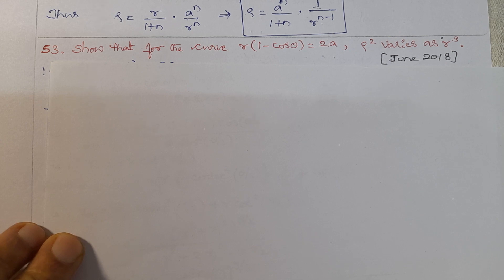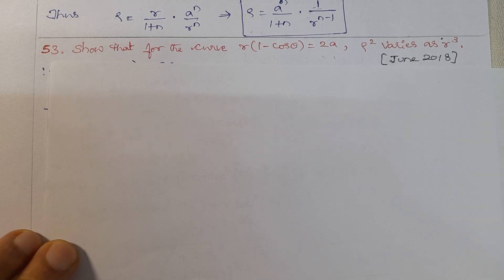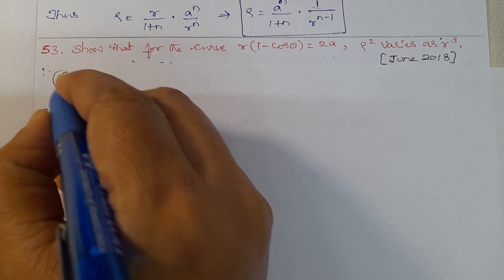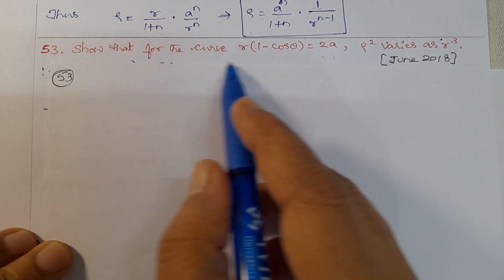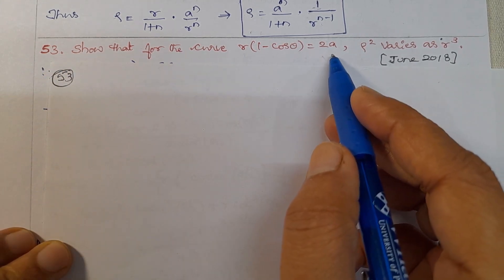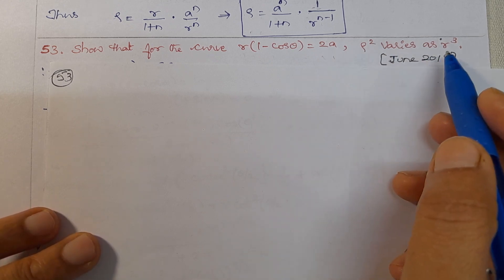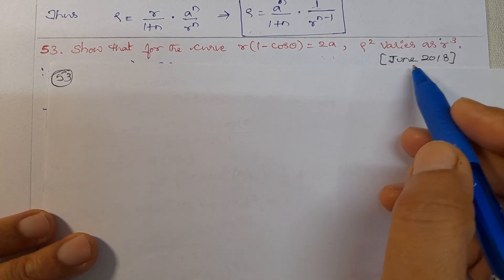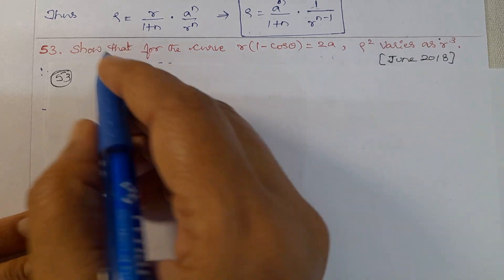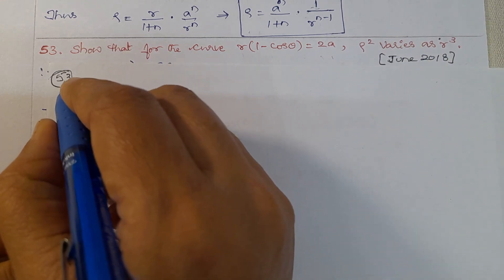Namaste. First semester engineering mathematics, module differential calculus, problem number 53. Show that for the curve r(1 - cos θ) = 2a, ρ² varies as r³. This is from the June 2018 paper.